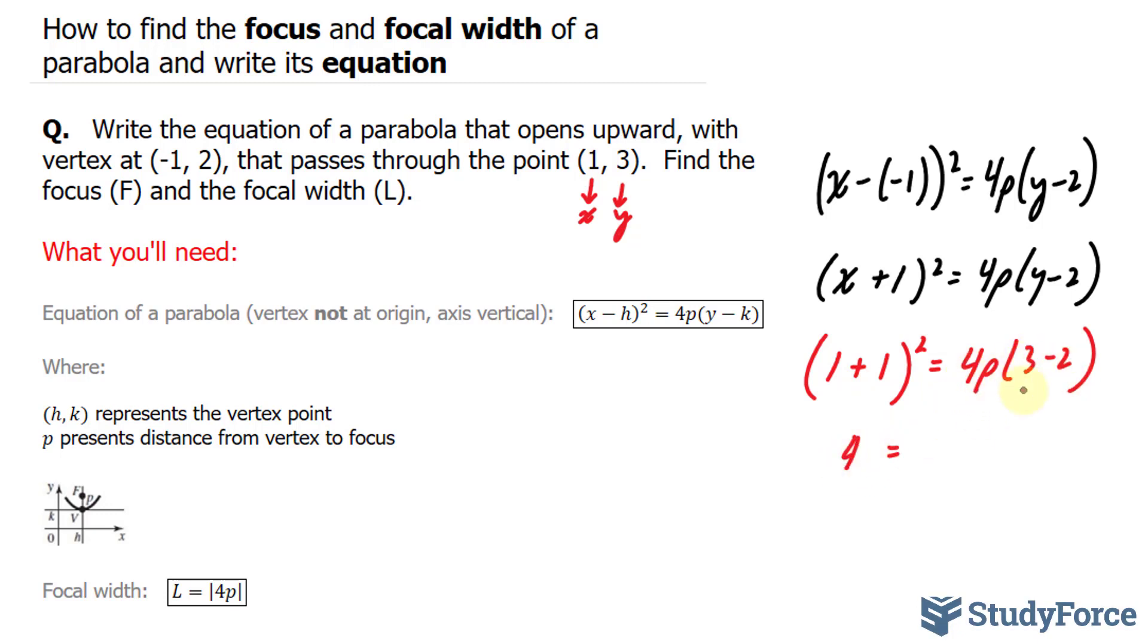Four times p times one, that's 4p. Dividing both sides now by four gives us p = 1.